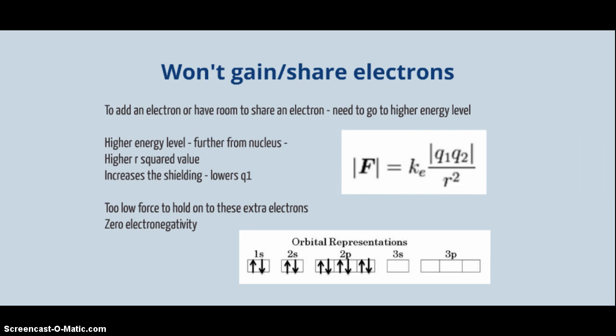So why won't they gain or share electrons? And that's because to add or gain an electron, they would need to go to a higher energy level. Because all of these orbitals are full and have no room for an extra electron. So any new electron that you gained or shared would have to go in the higher orbital.